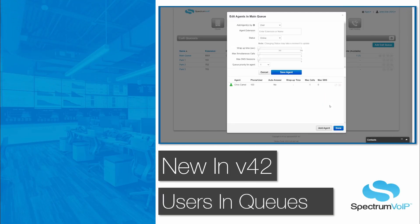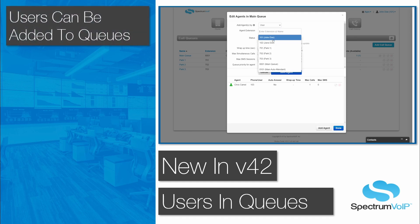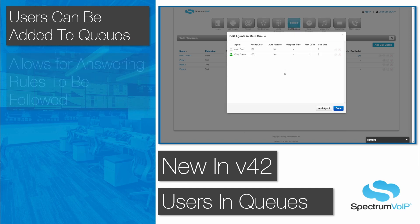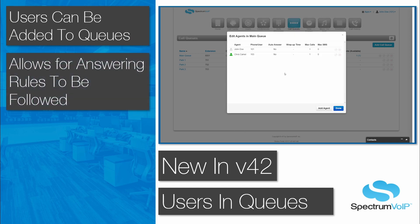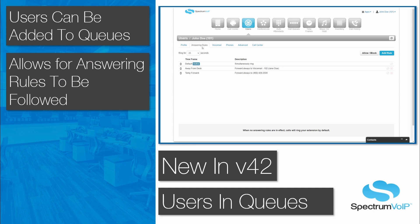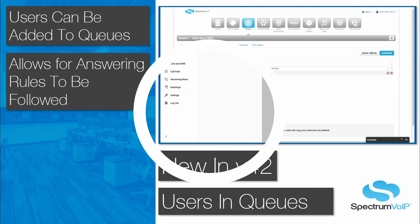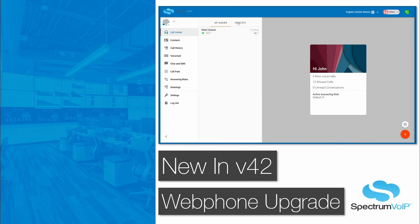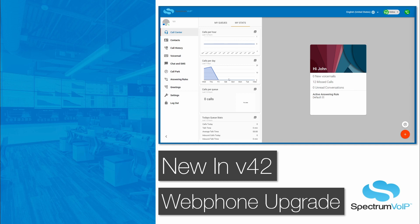Before v42, each device had to be added into a call queue in order to receive calls. The new portal will allow users to be added into call queues, which can allow for the user's answering rules, such as simultaneous ring, to ring all the user's devices. The Stratus web phone boasts some of the biggest upgrades.